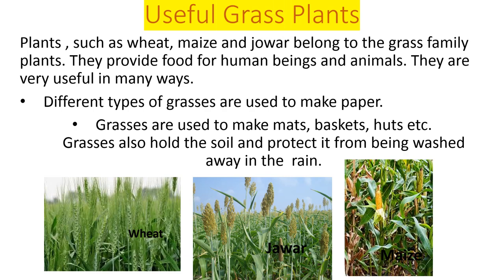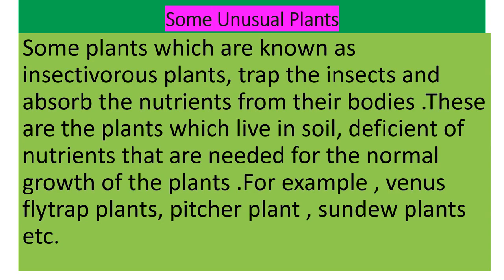Different types of grasses are used to make paper. Grasses are also used to make mats, baskets, and huts. Grasses also hold the soil and protect it from being washed away in the rain. In this way, grasses are very useful.